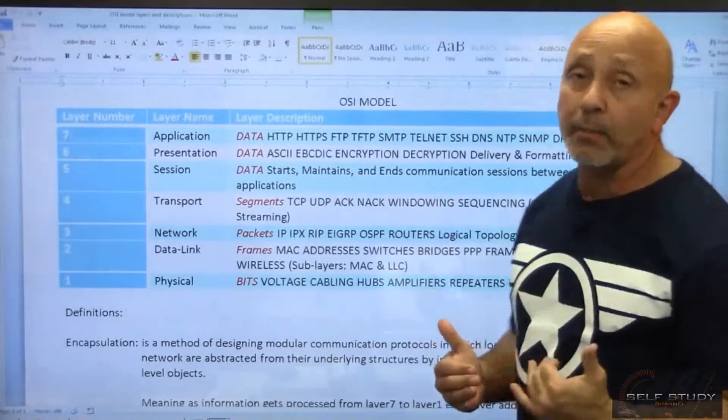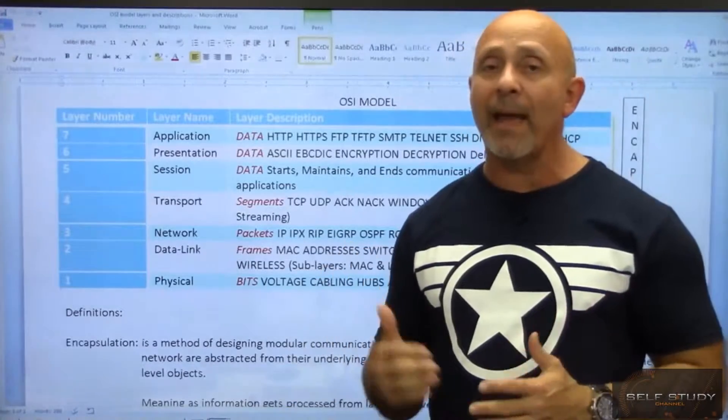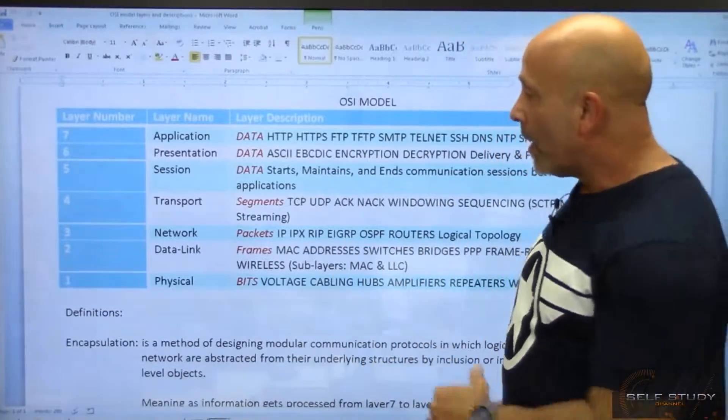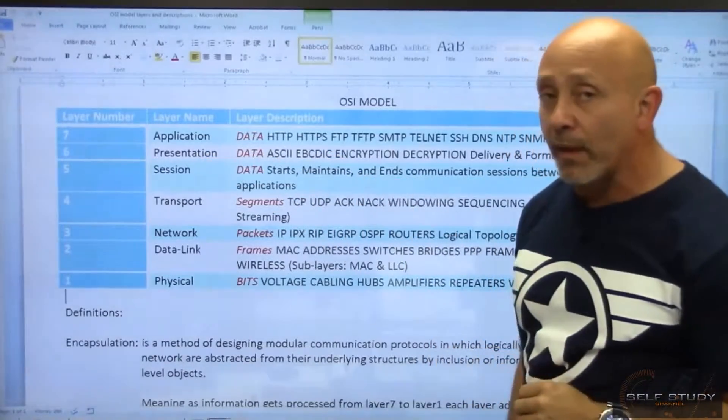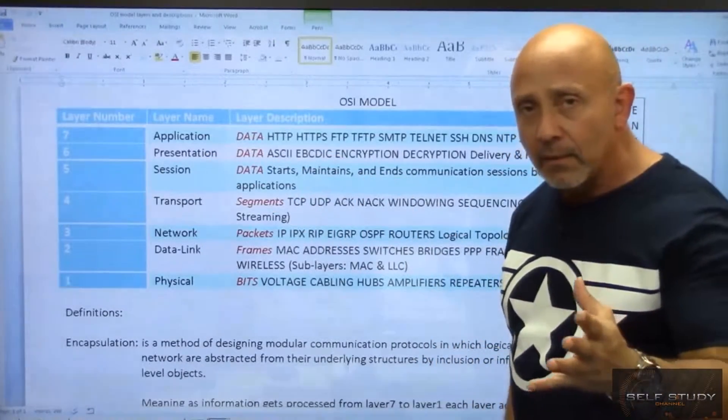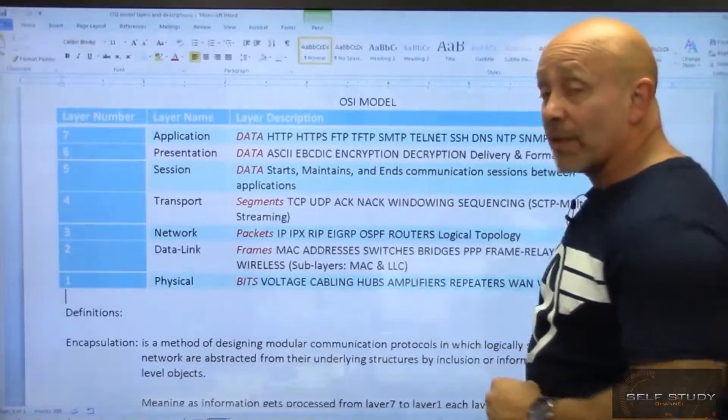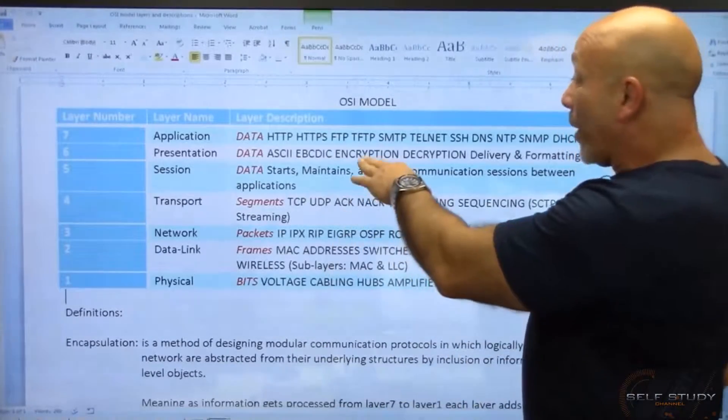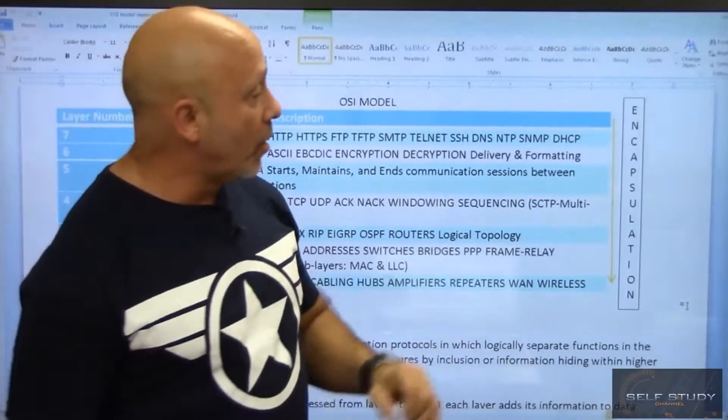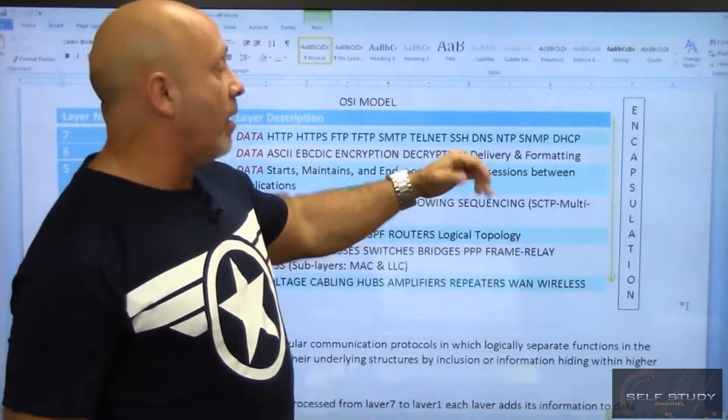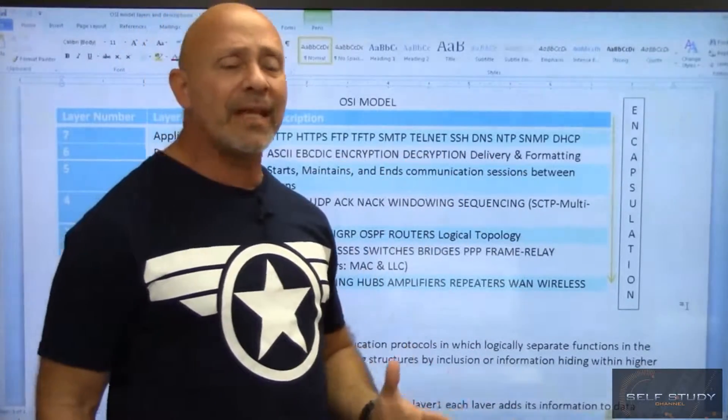But the presentation layer presents things to the application layer as it starts coming right back up the OSI model. It presents things to the application because what does the presentation layer deal with? Formatting. What are we talking? Are we talking ASCII? Are we talking EBCDIC, which is mainframe? We're dealing with encryption and decryption? So then, of course, proper delivery and formatting. So this is what we deal with in the presentation layer.